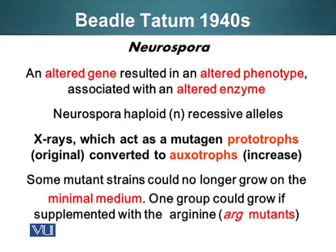Generally, Neurospora can grow on minimal media — that is, a minimal amount of amino acids, carbohydrates, lipids, etc. required for the organism to grow. When they used X-rays to mutate this organism, some of the mutated Neurospora strains were unable to grow on minimal media and had to be supplemented. They came up with the terms prototrophs, the original eaters, and auxotrophs, the increased eaters. They realized that if they supplemented the media with certain amino acids or chemical compounds, they were able to grow those mutants.